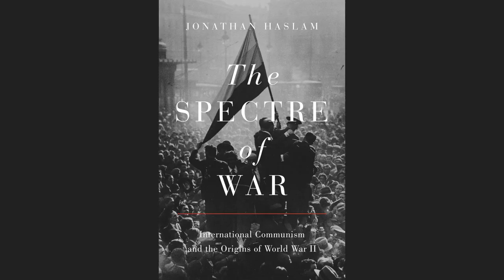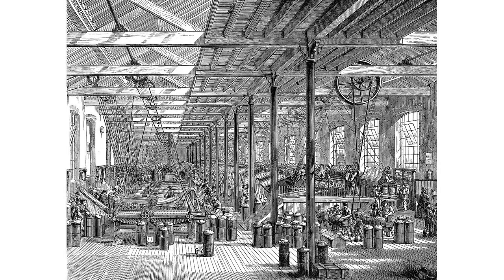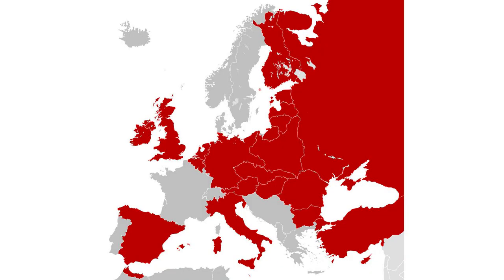To truly understand the rise of communism, we must first examine its ideological roots. Emerging in the 19th century, communism was born out of a reaction to the stark social and economic inequalities brought about by the Industrial Revolution. Influenced by the works of Karl Marx and Friedrich Engels, communism aimed to create a classless society where the means of production were owned and controlled by the working class.